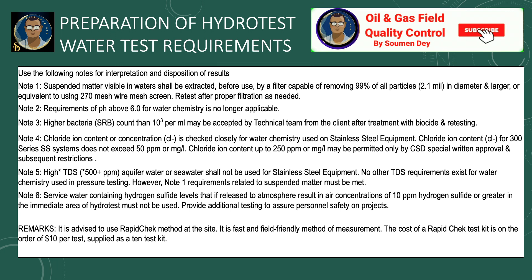Note 4: Chloride ion content or concentration is checked closely for water chemistry used for stainless steel equipment. Chloride content for 300-series SS systems shall not exceed 50 ppm (mg/L). Chloride ion content up to 250 ppm may be permitted only if the consulting service department or technical team from the client gives written approval. Note 5: High-TDS (500+ ppm) aquifer water or seawater shall not be used for stainless steel equipment. No other TDS requirement exists for water chemistry used in pressure testing; however, the suspended matter or TSS value must be met.